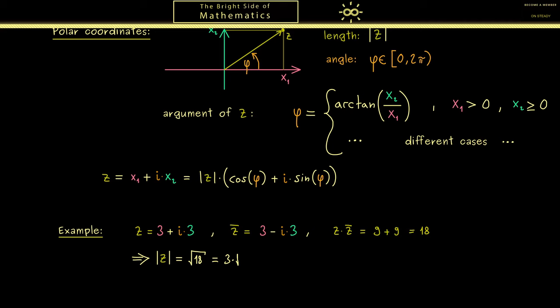Okay then the next step would be calculating the argument φ. Using the formula from above this would mean we divide 3 by 3 and then we take the arc tangent of it.